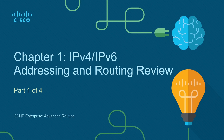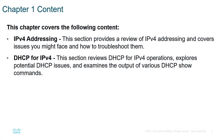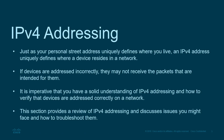Welcome to the first chapter of the CCNP Enterprise Advanced Routing course. Presentations in this course have been broken up into four parts to make it easier to digest. Within Part 1, I'll be looking at IPv4 addressing and DHCP server. All of this content should be revision — we've gone through the CCNA course and it's all been covered there, so it's just a good refresher.